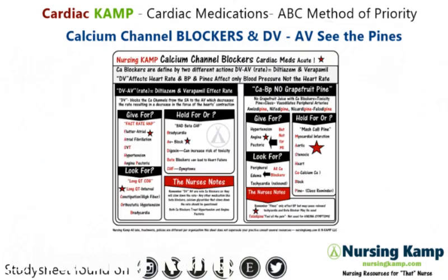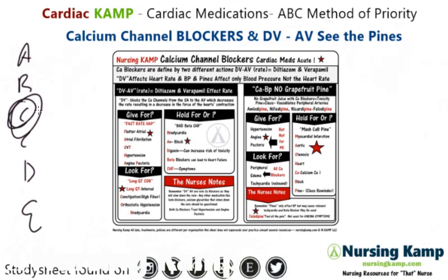Calcium channel blockers are mainly given for either fast heart rate, hypertension, or AFib and AFlutter. It's part of the cardiac ABCs — A, B, C, D, E — which I covered in a previous lecture as far as order of priority. Calcium channel blockers fit right around there, labeled as CA blockers.